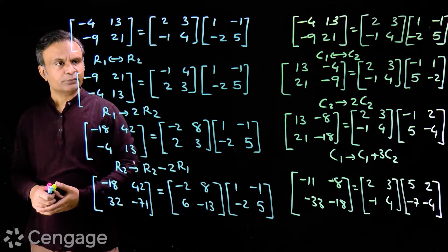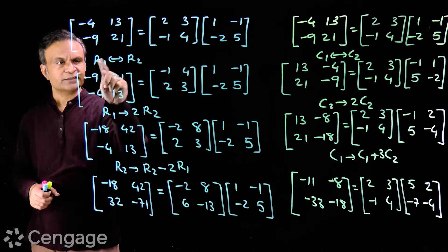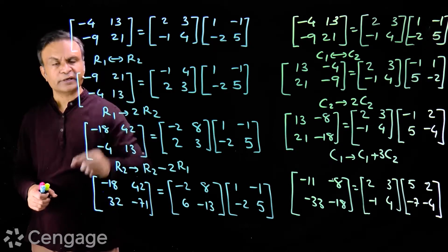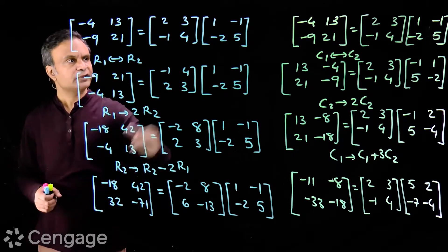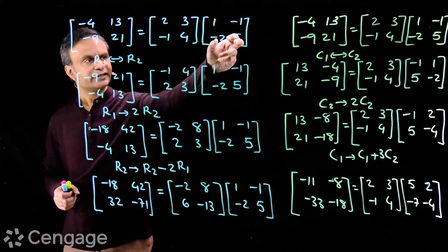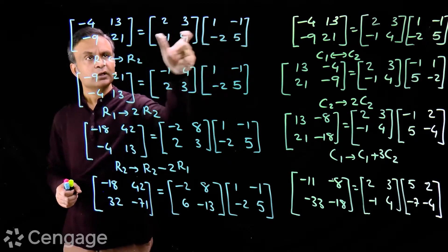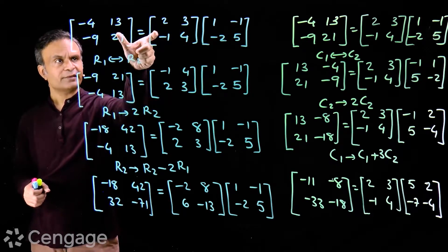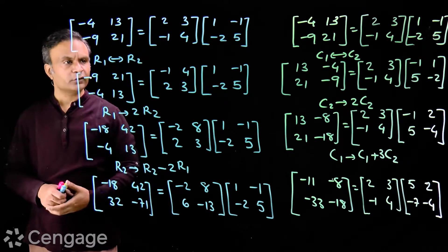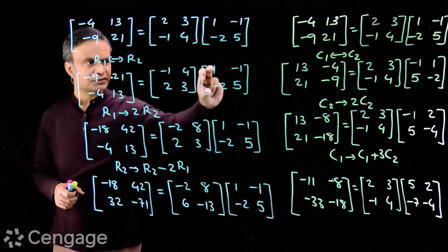The first elementary operation is interchanging row 1 and row 2. I am keeping this matrix intact. In these two matrices I am interchanging row 1 and row 2, so I have this result.